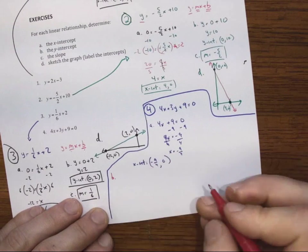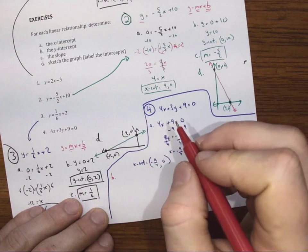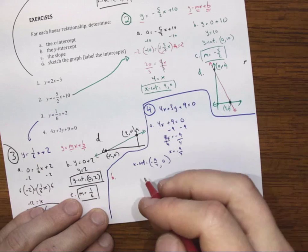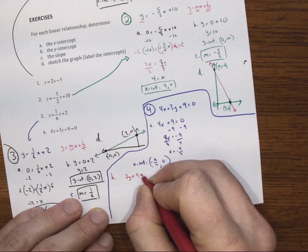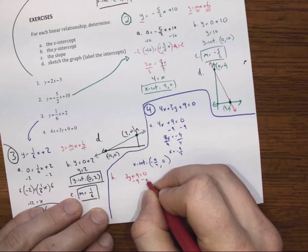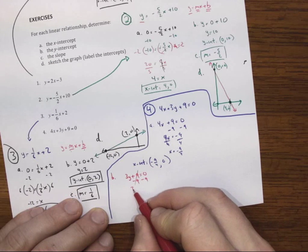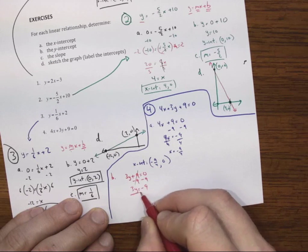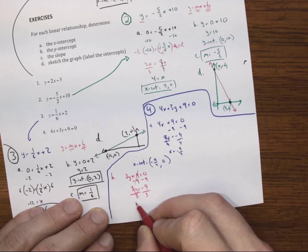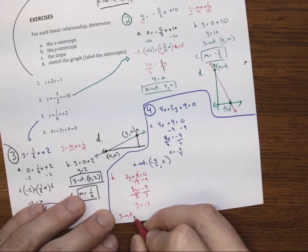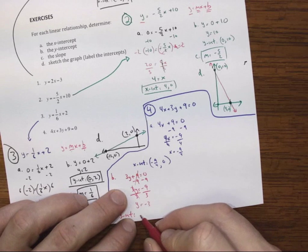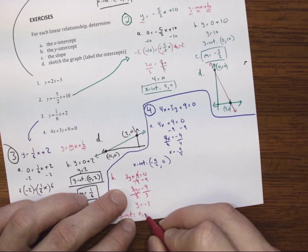Okay. So let's move on to question B, which asks for the y-intercept. So I'll make x 0. So that means I just have 3y plus 9 is equal to 0. Take away 9. You get 3y is equal to negative 9 divided by 3. You get y is equal to negative 3. So the y-intercept is at 0, negative 3.